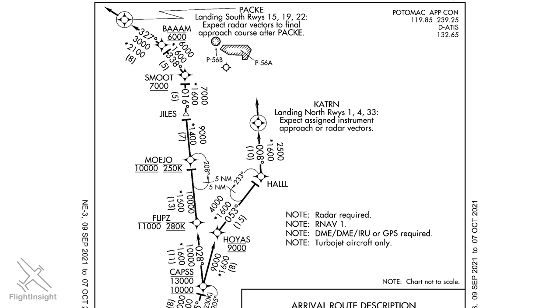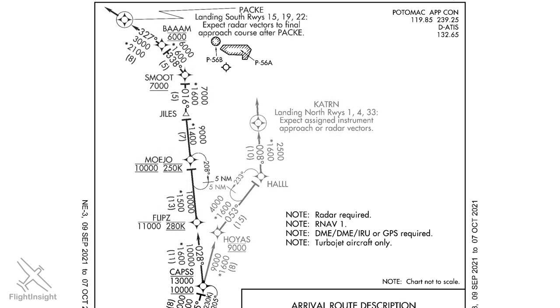Let's look at the CAPS-3 arrival in full again. Notice that at CAPS, it forks off to the left and right. Up to now, we've only been talking about the right fork, which ends at Catron — this is the route when Washington is landing north, when runways 1, 4, or 33 are in use. If they're landing south using runways 15, 19, or 22, we use the other route, which ends at the PAC intersection.